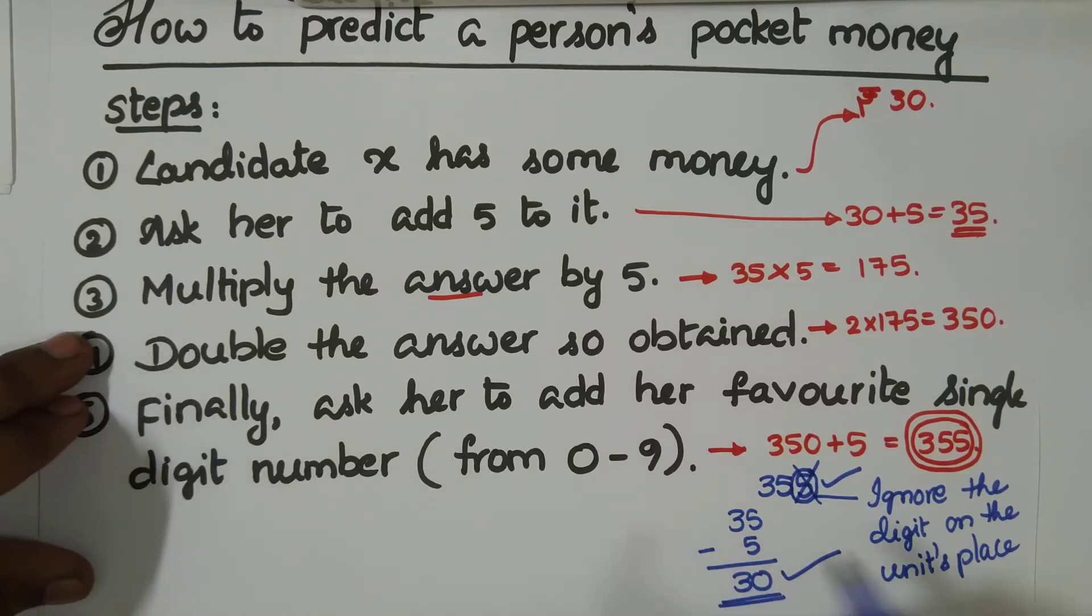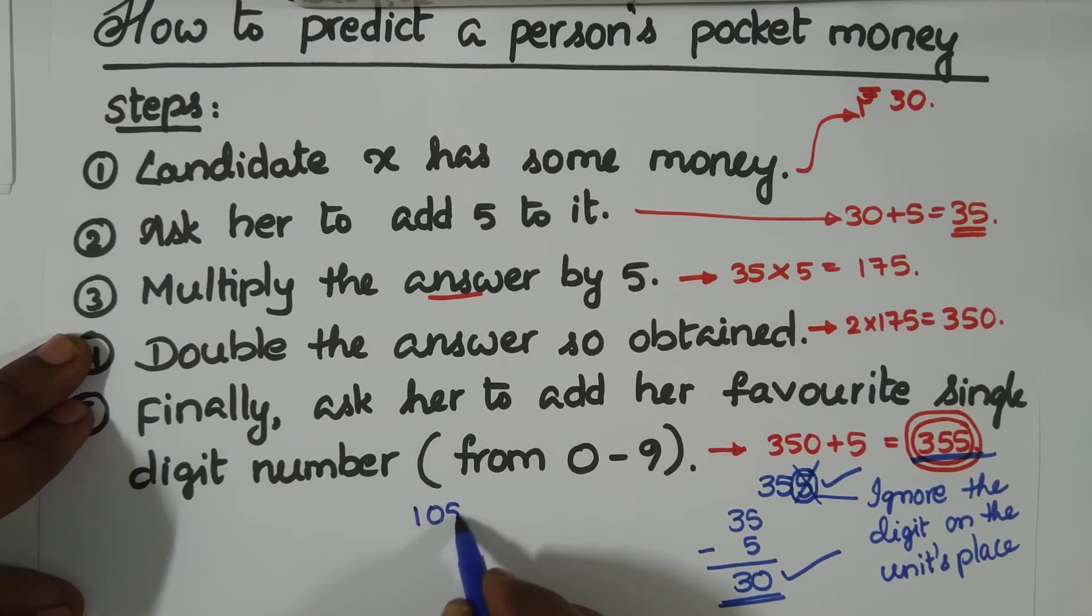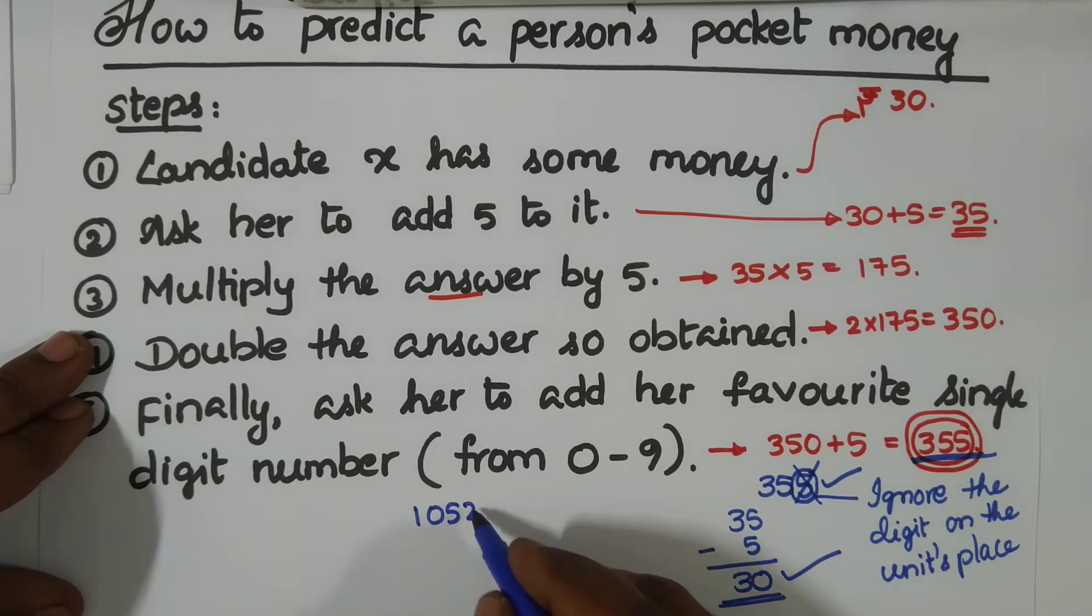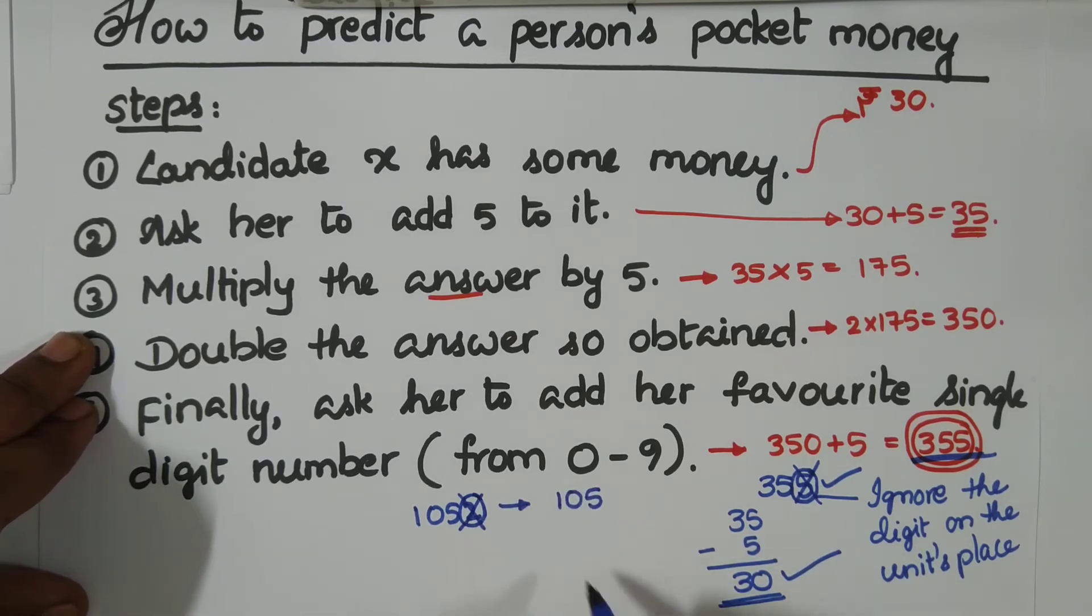You want some other example? Someone says the final answer as 1052. Now you have to ignore the last digit on this unit's place. Remaining number is 105. From this number, subtract five. Now you have 100. That means he or she has 100 rupees.